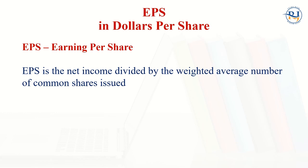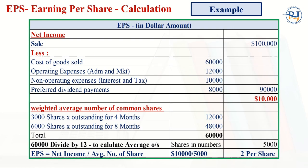The next important term is Earning Per Share, calculated in dollar per share. EPS is the net income available to common shareholders divided by common shares issued. For example: Sales = $100,000, Cost of Goods Sold = $60,000, Operating Expenditure (administration and marketing) = $12,000, Non-operating Expenses (interest and taxes) = $10,000, Preferred Dividend Payment = $8,000. Total expenditure = $90,000, so Net Income = $10,000.